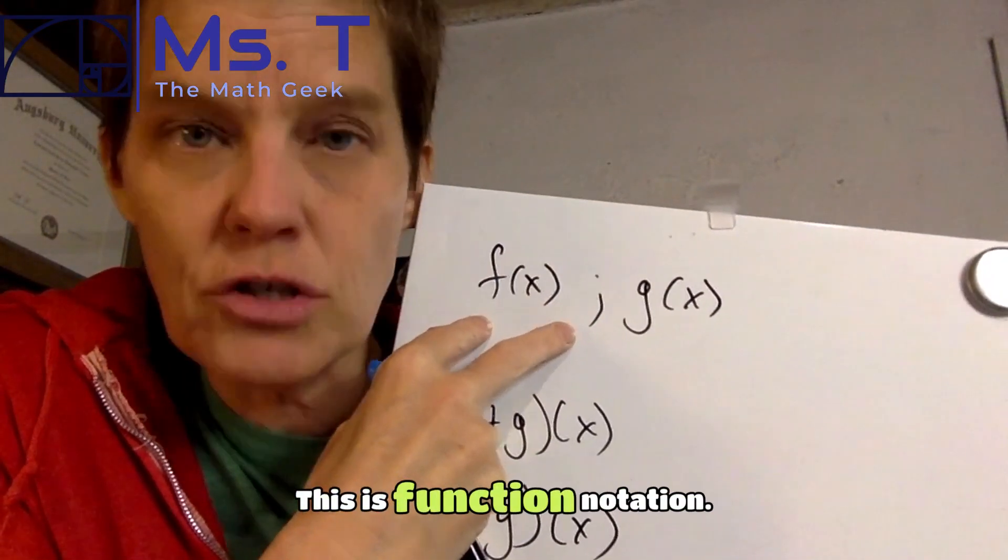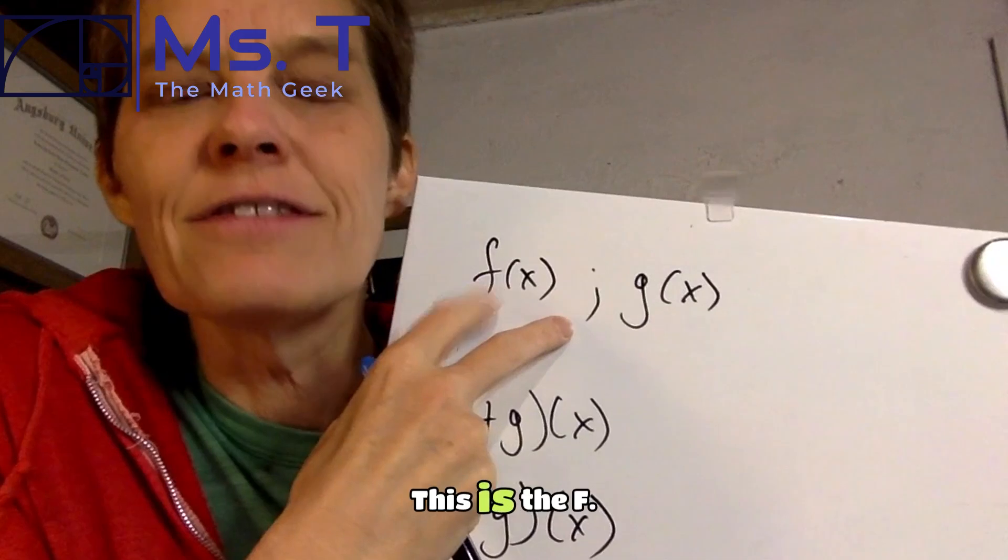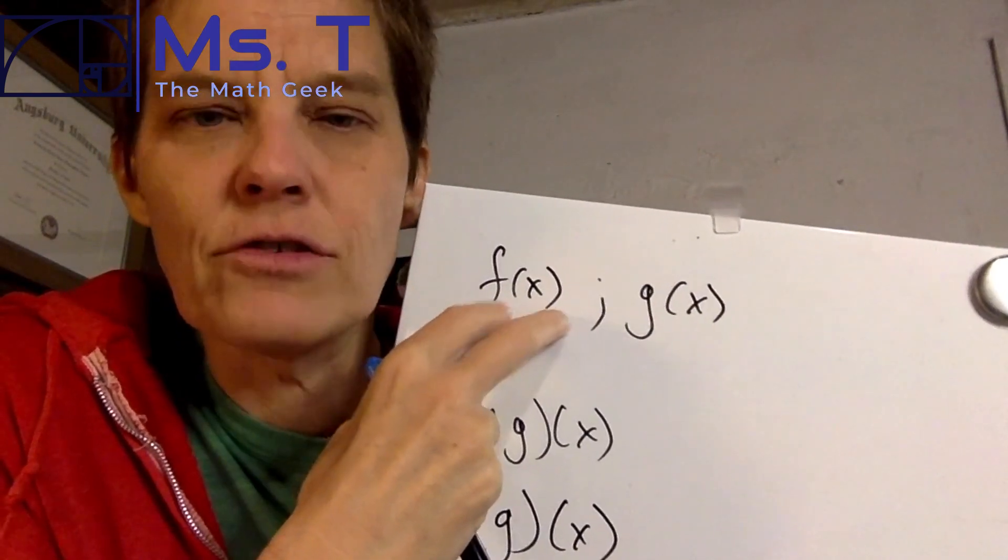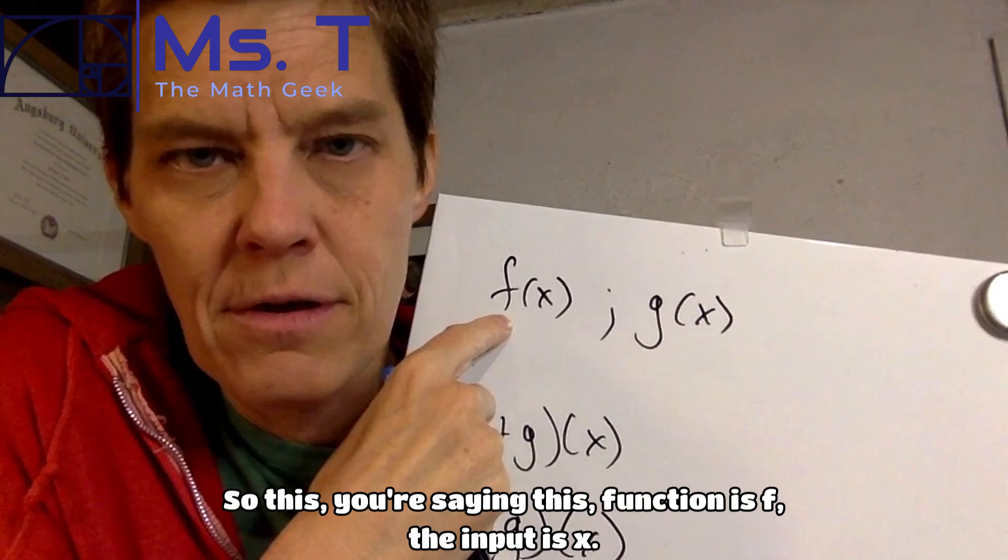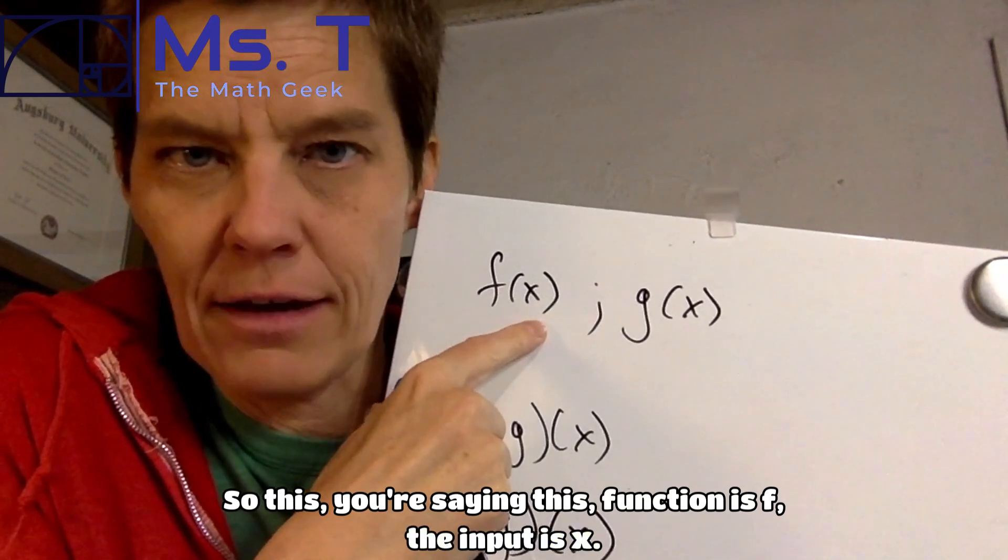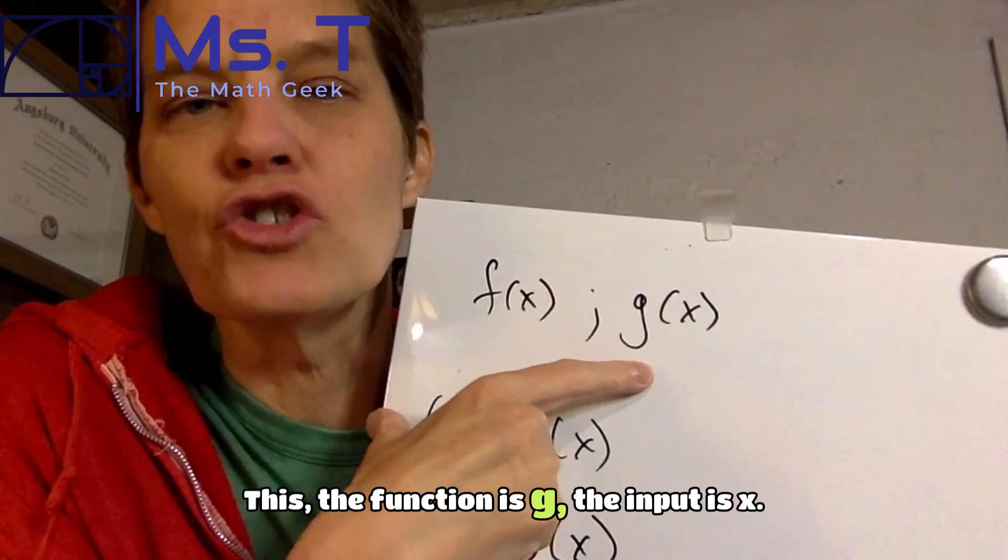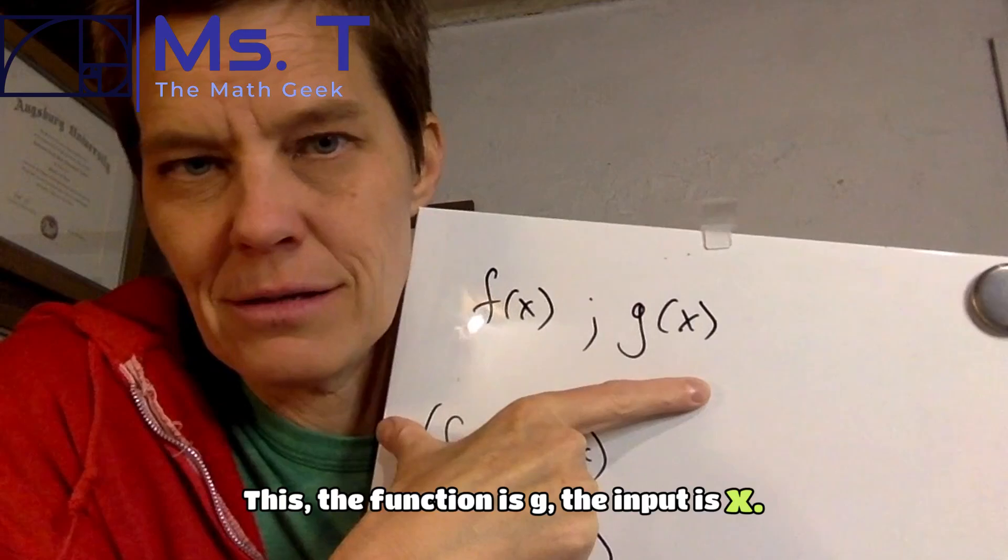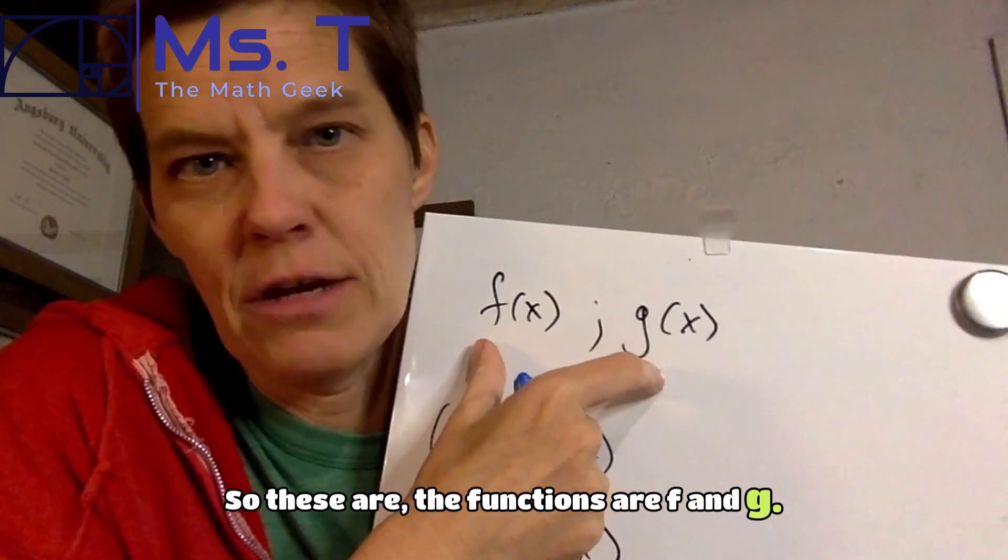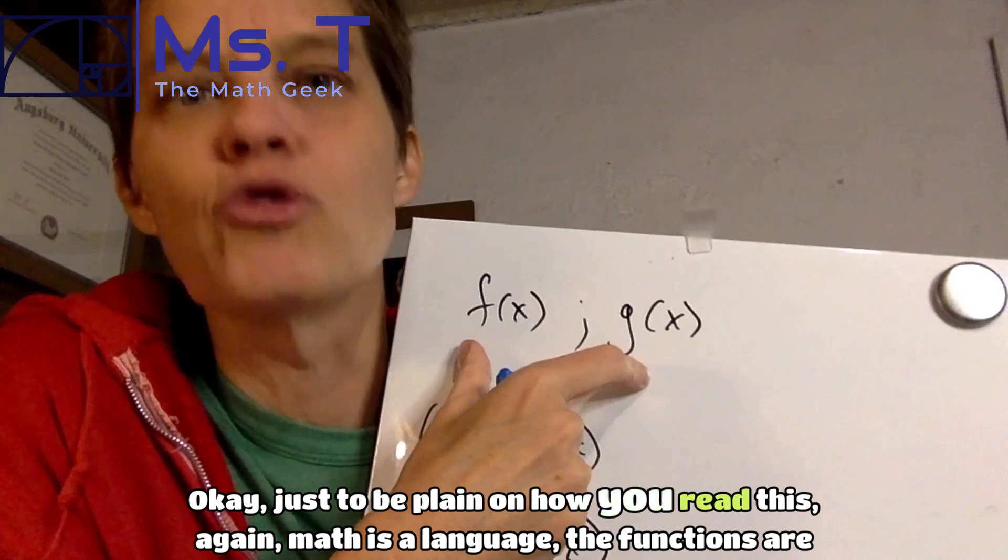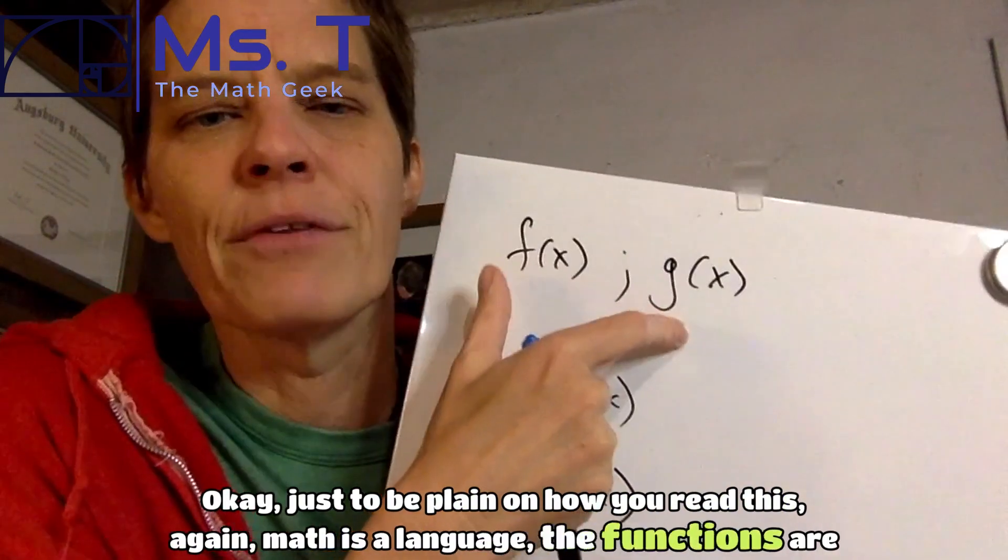So let's say we have this. This is function notation. This is the f of x. So you're saying the function is f. The input is x. This, the function is g. The input is x. So the functions are f and g, just to be plain on how you read this. Again, math is a language. The functions are f and g.